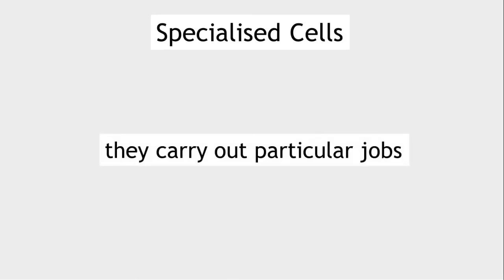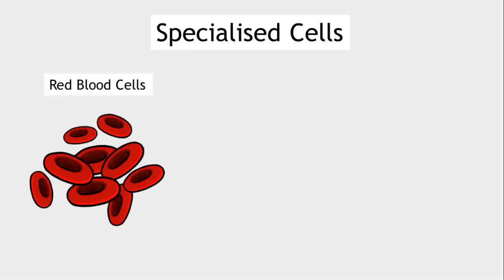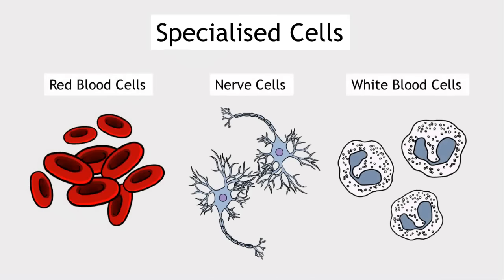Specialised cells. Some cells are specialised. They are able to carry out particular jobs. The specialised cells we will look at are red blood cells, nerve cells, and white blood cells.